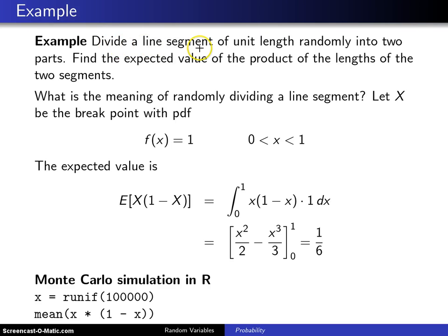Divide a line segment of unit length randomly into two parts. Find the expected value of the product of the lengths of the two segments.